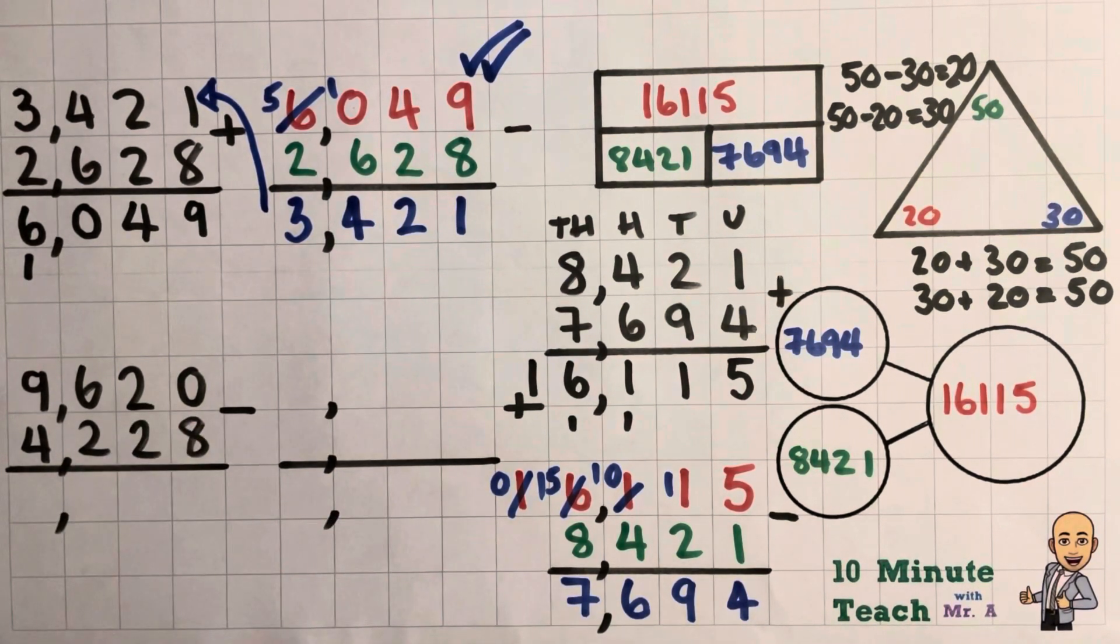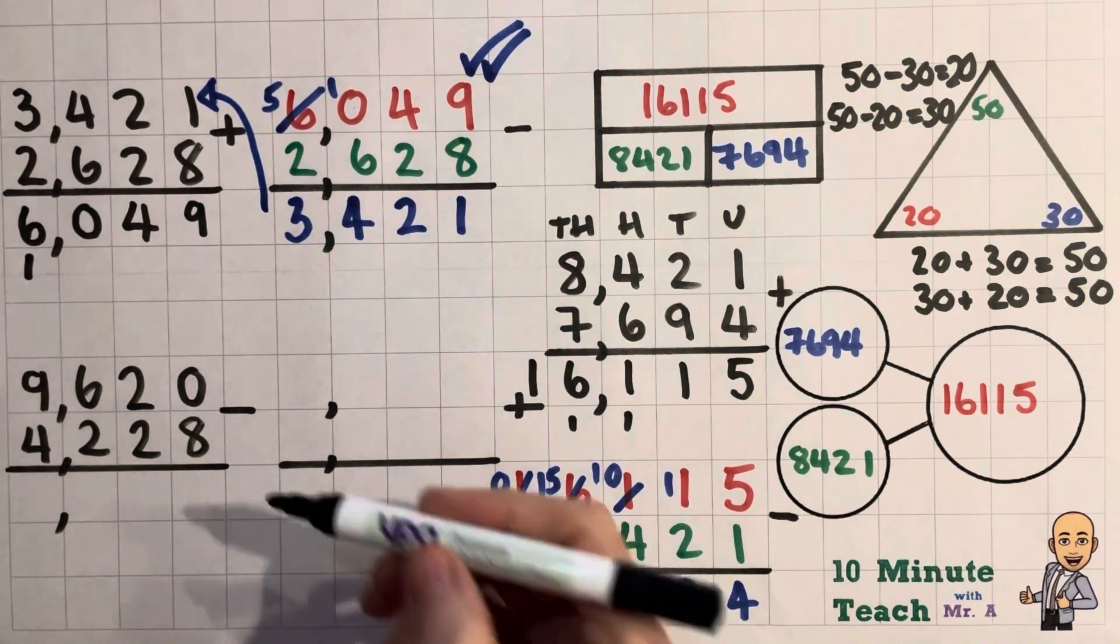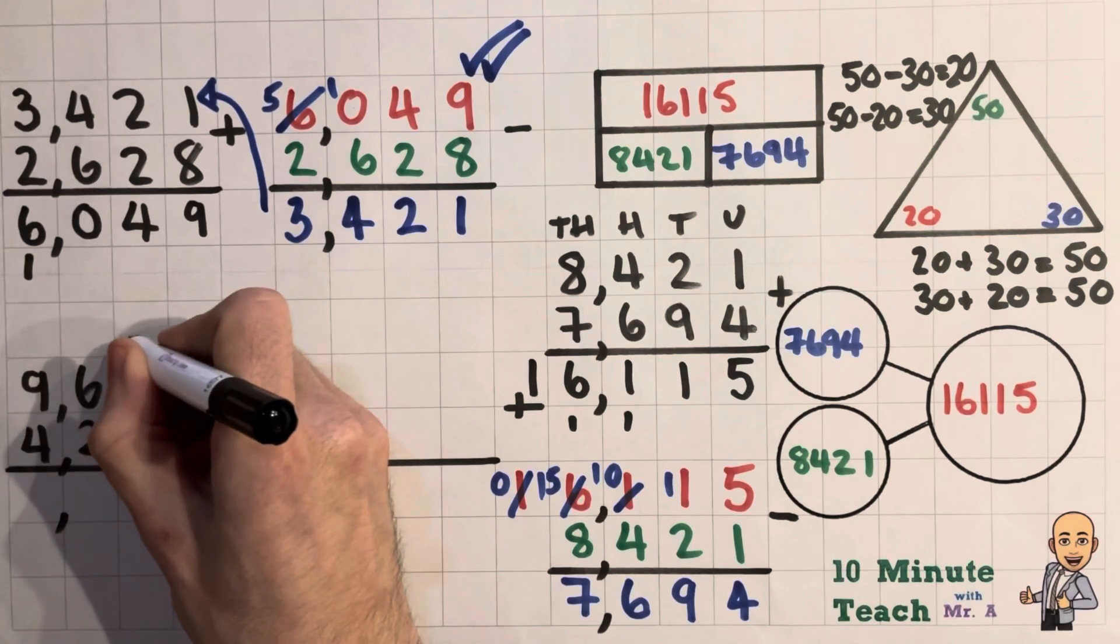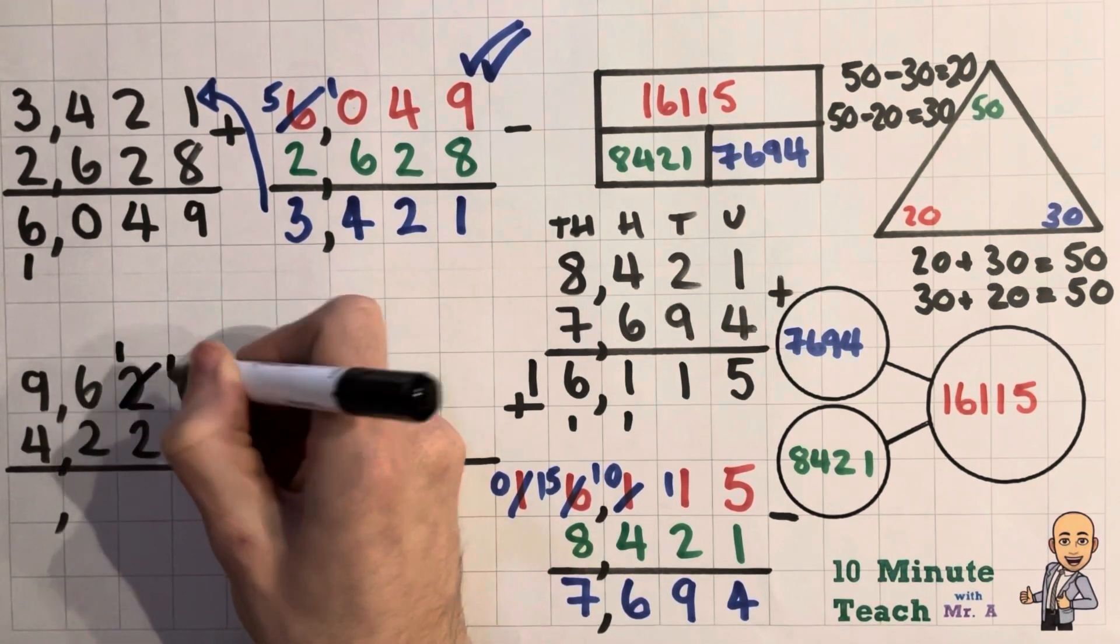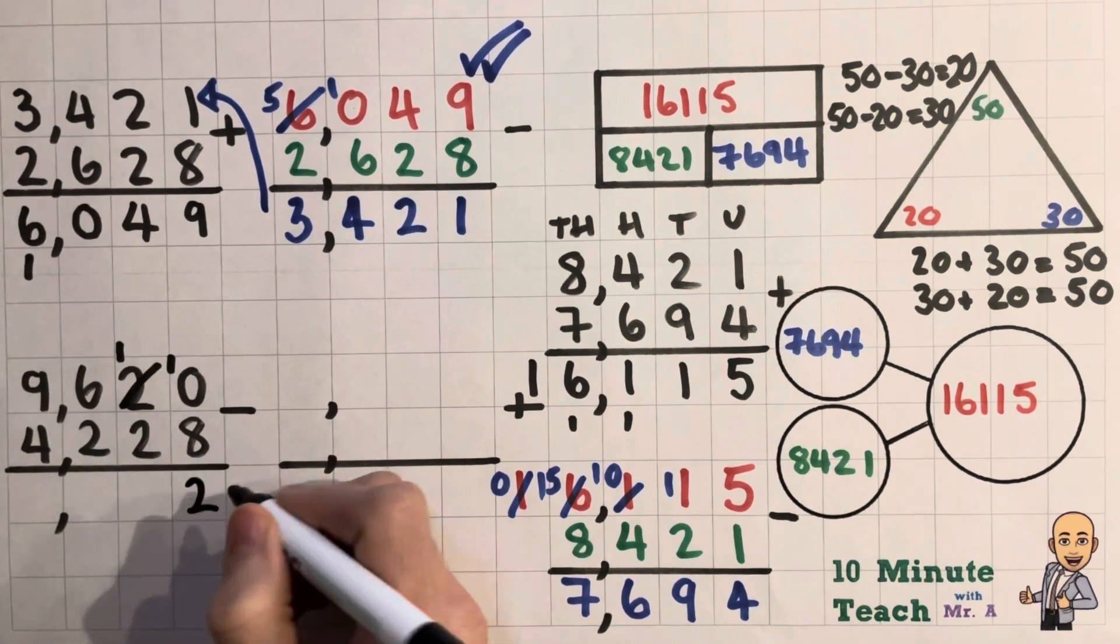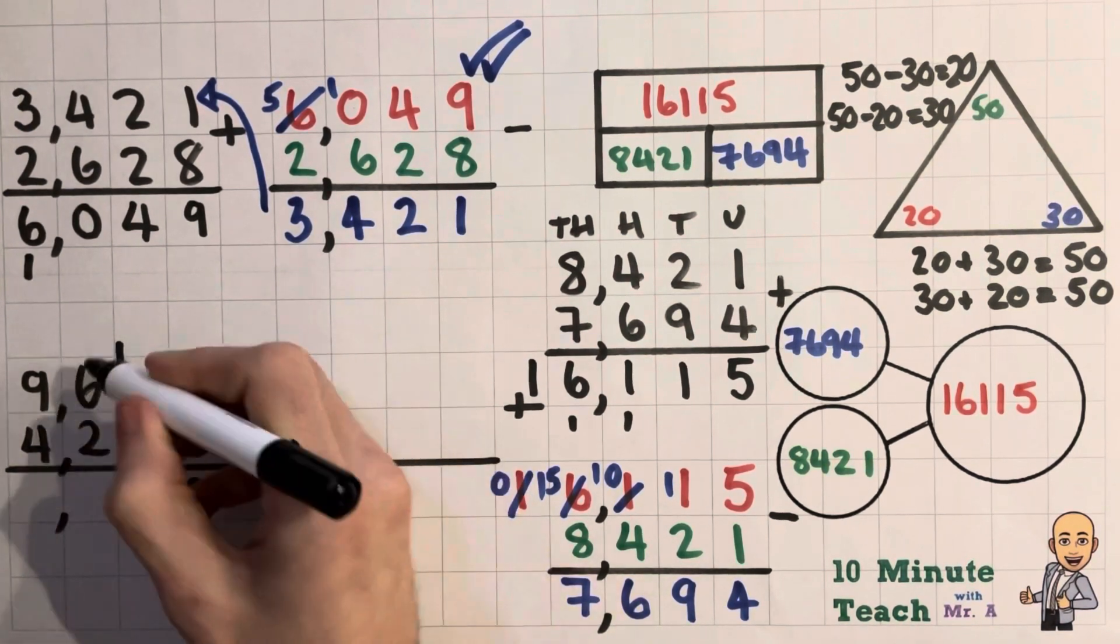So let's try our second and final example. Here we go. So 0 take 8 I can't do, so I am going to have to borrow. So that leaves us with there. And I have 10 take away 8 now, which leaves us with 2.